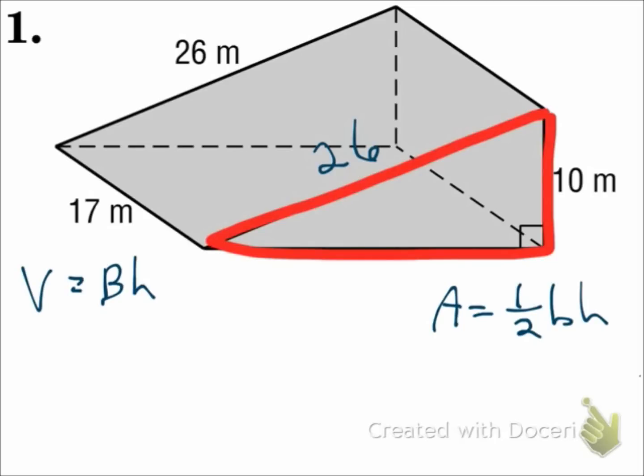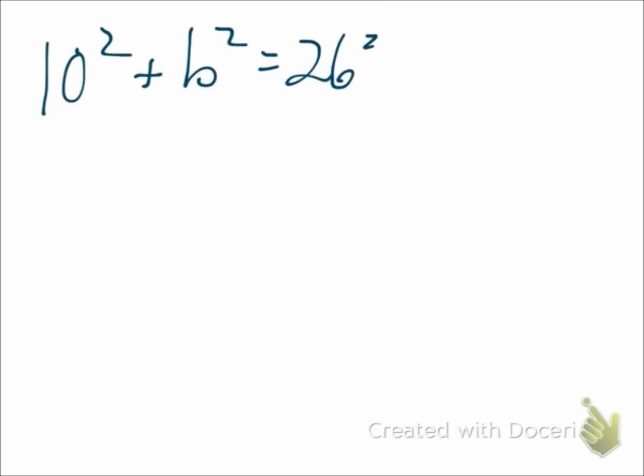And you can do the Pythagorean theorem to find the third side. 10 squared plus B squared equals 26 squared. So 100 plus B squared equals 676.